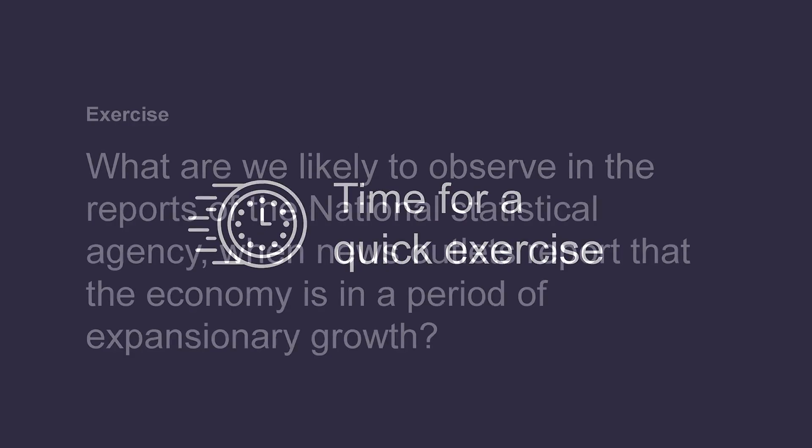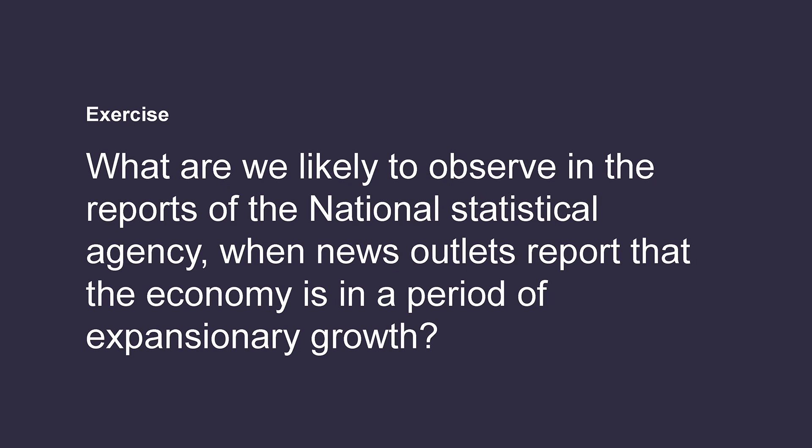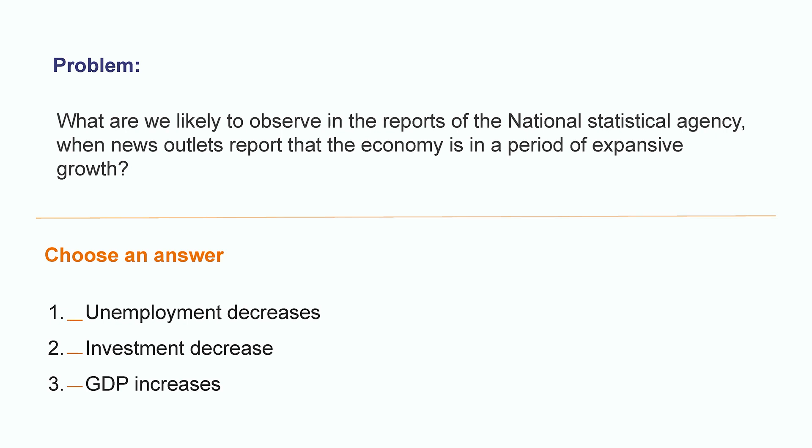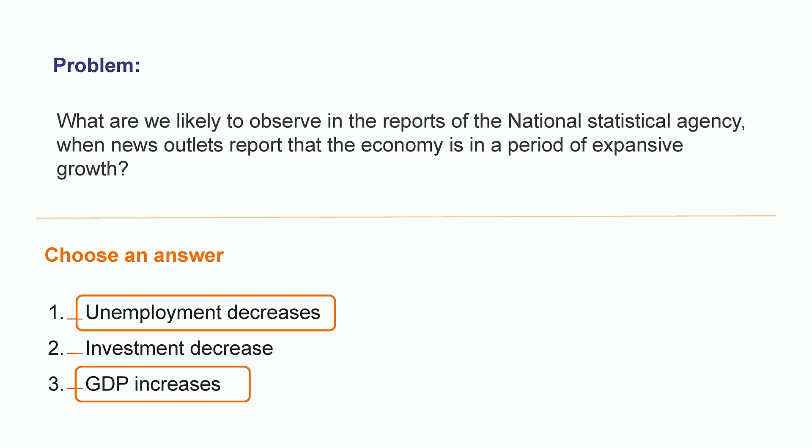Time for a quick exercise. Now that you have an understanding of how economic fluctuations work, let's discuss the following question: What are we likely to observe in the reports of the National Statistical Agency when news outlets report that the economy is in a period of expansionary growth? We will see a decrease in unemployment, a decrease in investment expenditures, or a GDP increase? You can choose more than one option. Both answers 1 and 3 are correct. Expansive growth means GDP increase, which usually goes together with a decline in the unemployment rate. As for investment, since GDP and investment usually move together, we would expect investment spending to go up, not down.